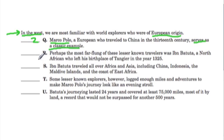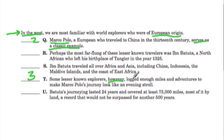Now we're talking about other explorers, and that's where T comes in. This sentence says: 'Some lesser-known explorers, however,' — comparing them to Marco Polo — 'logged enough miles and adventures to make Marco Polo's journey look like an evening stroll.'